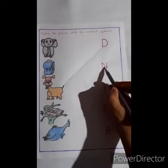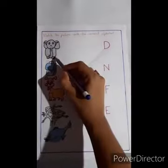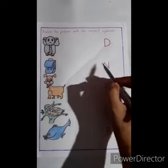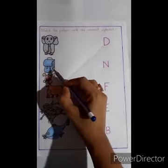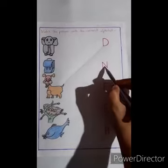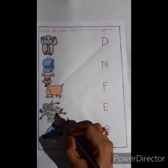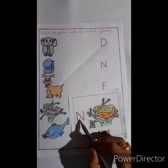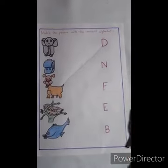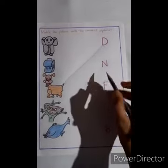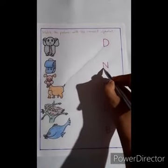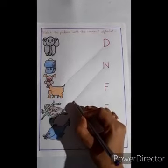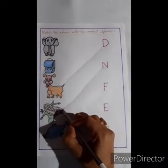Again. N for elephant? No. N for bag? No. N for nest? Yes! It's N for nest. Again, draw a line from the alphabet N to the picture of nest.